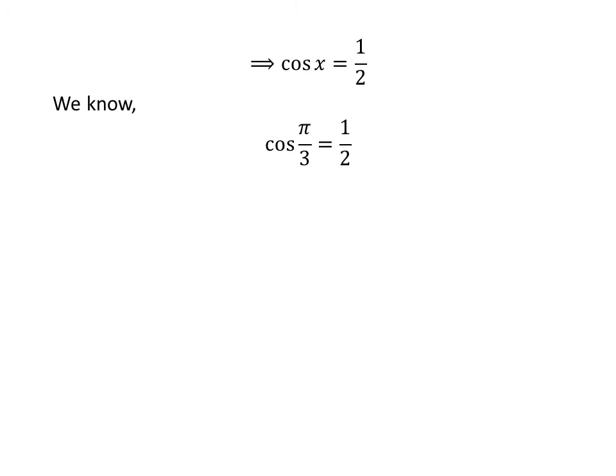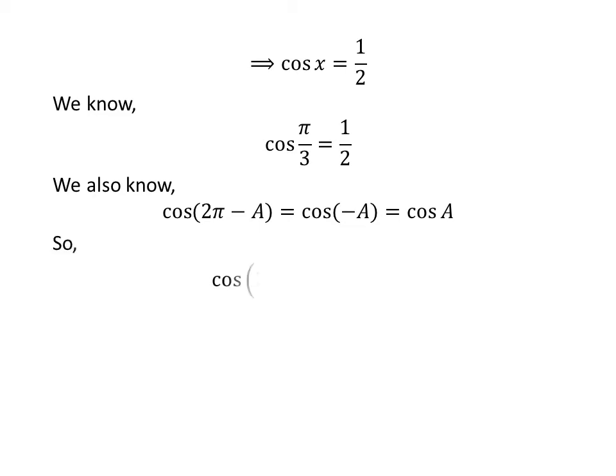We know the value of cosine of pi upon 3 is one half. We also know the value of cosine of x repeats after the interval of 2 times pi, so cosine of 2 times pi minus a is equal to cosine of minus a. We also know the famous trigonometry identity cosine of minus a is equal to cosine of a. The proof of this identity is given in the video appearing in the upper right corner of this video, and the link is also given in the description section.